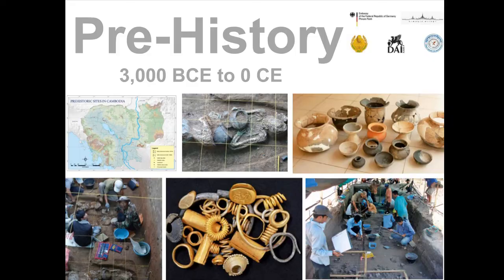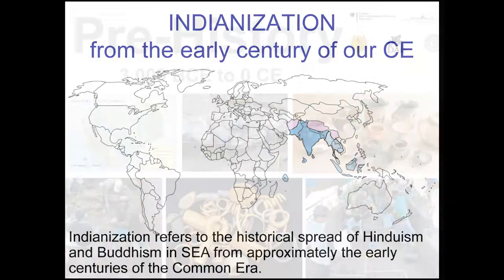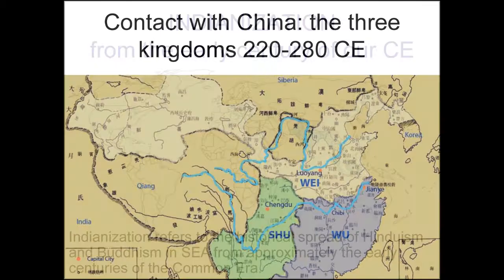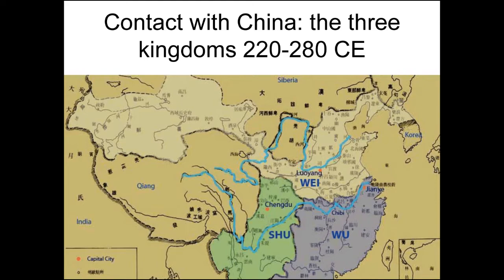From the first common era, the Indians spread Hinduism and Buddhism to Southeast Asia, and Cambodia was one of the countries that received the Indian influence. Not only Indians, but China also had contact with Cambodia from the middle 3rd century. As you can see in this map, there are three kingdoms. The Chinese recorded Cambodia from the first to approximately the 6th century as the Funan period. Funan was the Chinese name of an ancient kingdom located around the Mekong Delta, southern Cambodia, and present-day Vietnam.